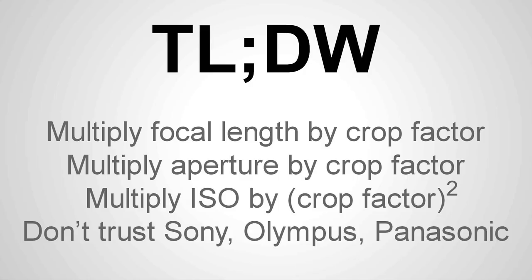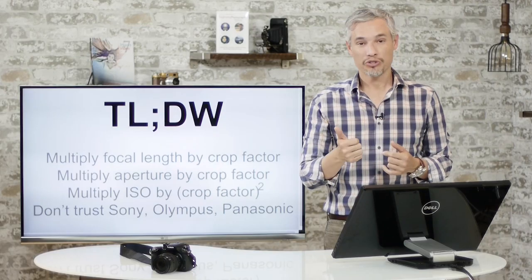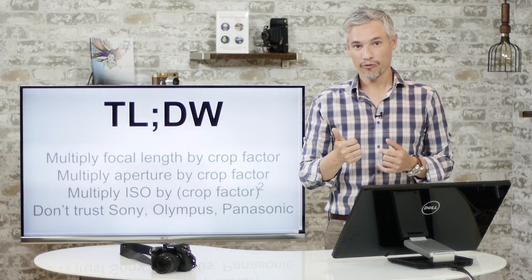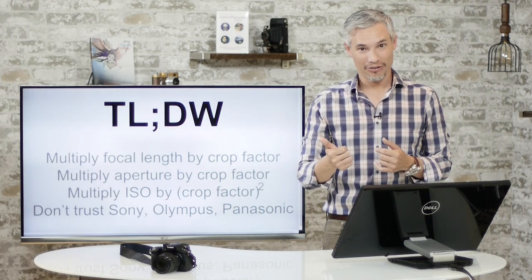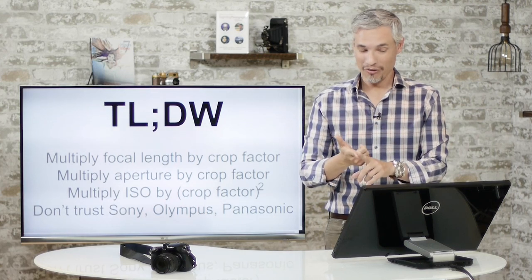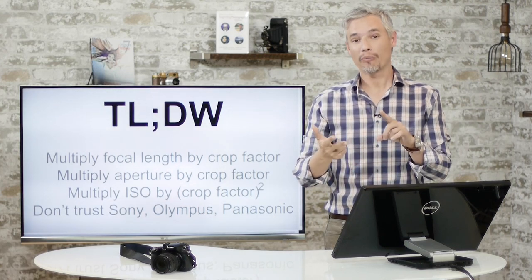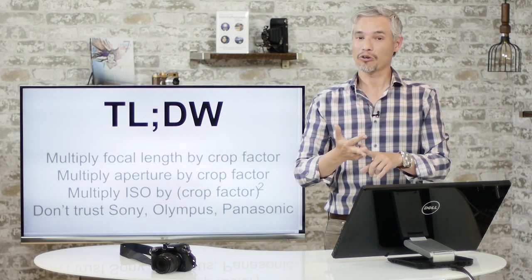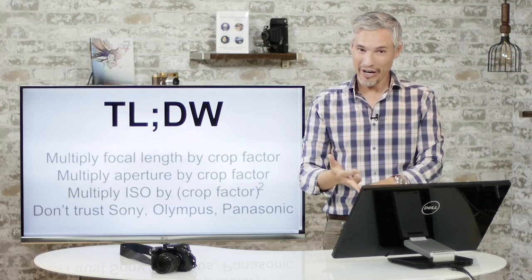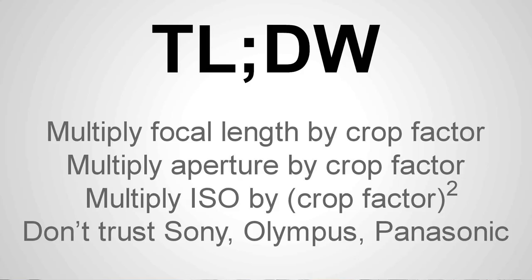Up first, because I know not everybody watches the whole thing, here's a quick too-long-didn't-watch summary. You want to multiply your focal length by your crop factor. You want to multiply your aperture by your crop factor, and you want to multiply your ISO by your crop factor squared. Also, don't trust Sony, Panasonic, and Olympus. If you want more information about that, keep watching and I'll fill you in.